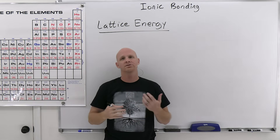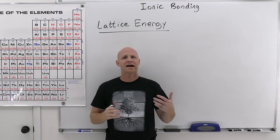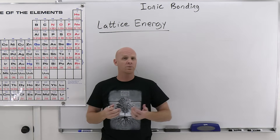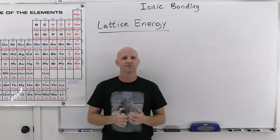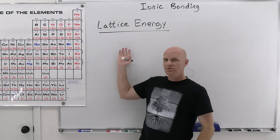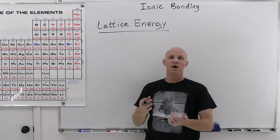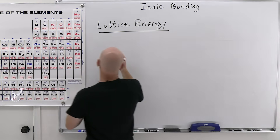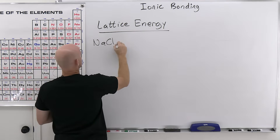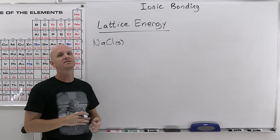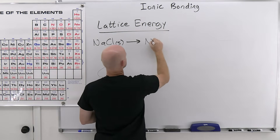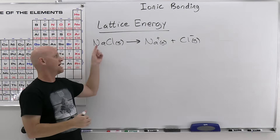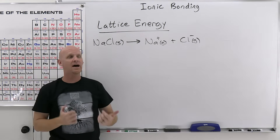Now we'll spend the rest of the lesson talking about lattice energy. Lattice energy is a measure of the strength of ionic bonds — the higher the lattice energy, the stronger the ionic bonds in an ionic compound. The technical definition involves an equation: you start with an ionic solid and have it breaking apart into its gaseous ions, such as NaCl breaking into a gaseous sodium ion and a gaseous chloride ion. The energy change associated with that reaction is what we refer to as lattice energy.